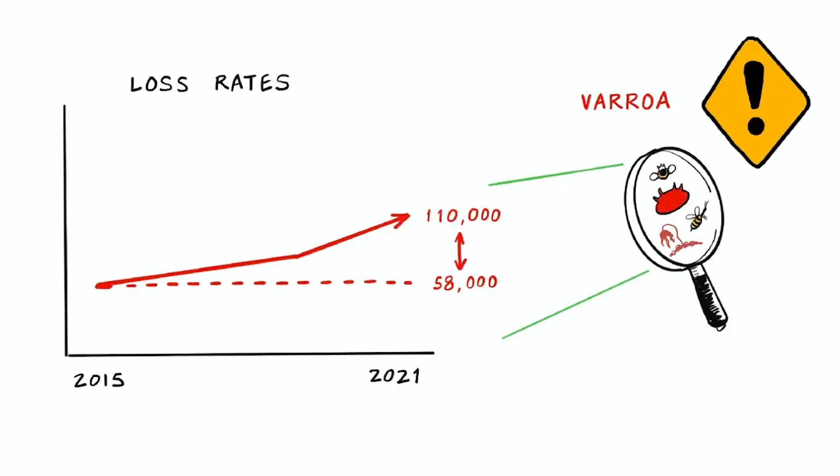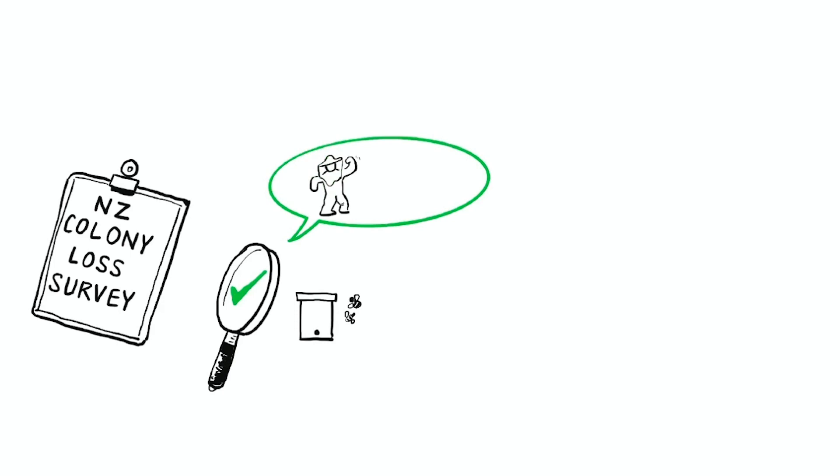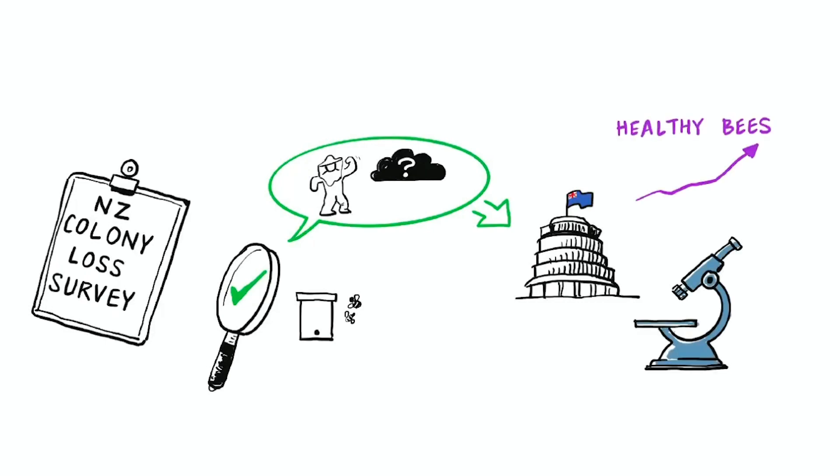beekeepers identified varroa as the biggest problem. Our colony loss survey is the best tool we have for recording the challenges faced by beekeepers across the country. Not only does the survey keep beekeepers aware of emerging issues, it also helps government and industry set priorities for future investment in science and research to support beekeepers.